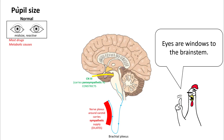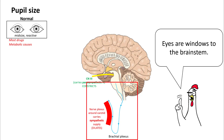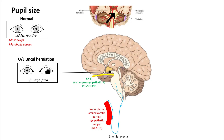Pupillary exam is the most important aspect of evaluating altered mental status, as it can give you a lot of information about the location of the lesion. The parasympathetic supply, which constricts the pupils, comes through cranial nerve three, the oculomotor nerve. The sympathetic supply descends from the pons to the medulla, reaches the brachial plexus, is carried around the carotid arteries, and then reaches the eyes to cause dilation. Cranial nerve three is in close approximation with the uncus. Therefore, in uncal herniation, it gets compromised, resulting in loss of parasympathetic supply and motor function.